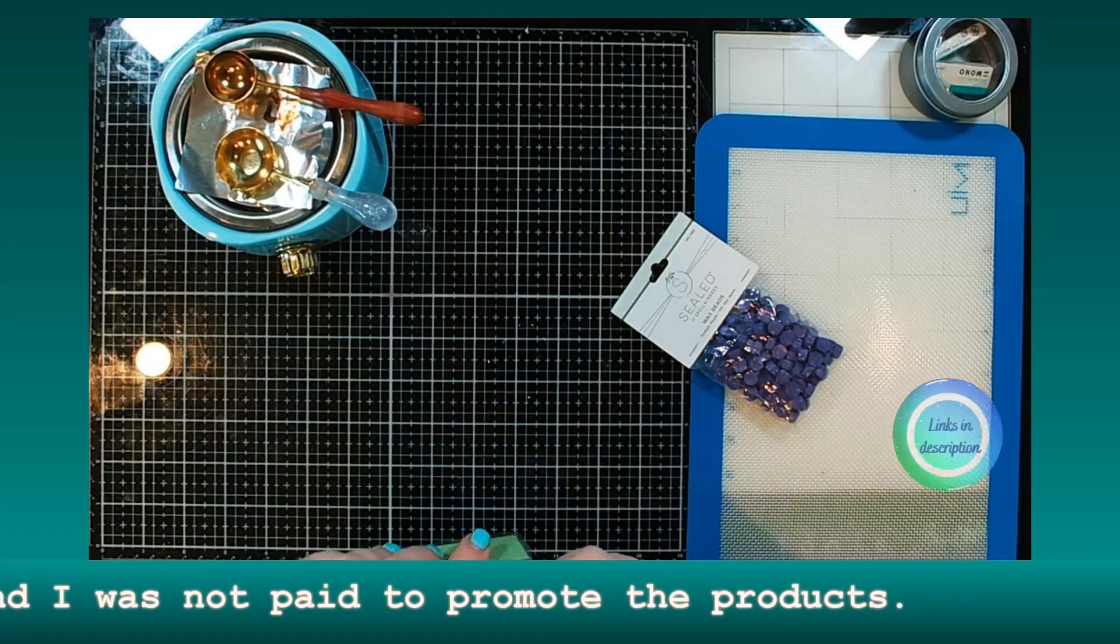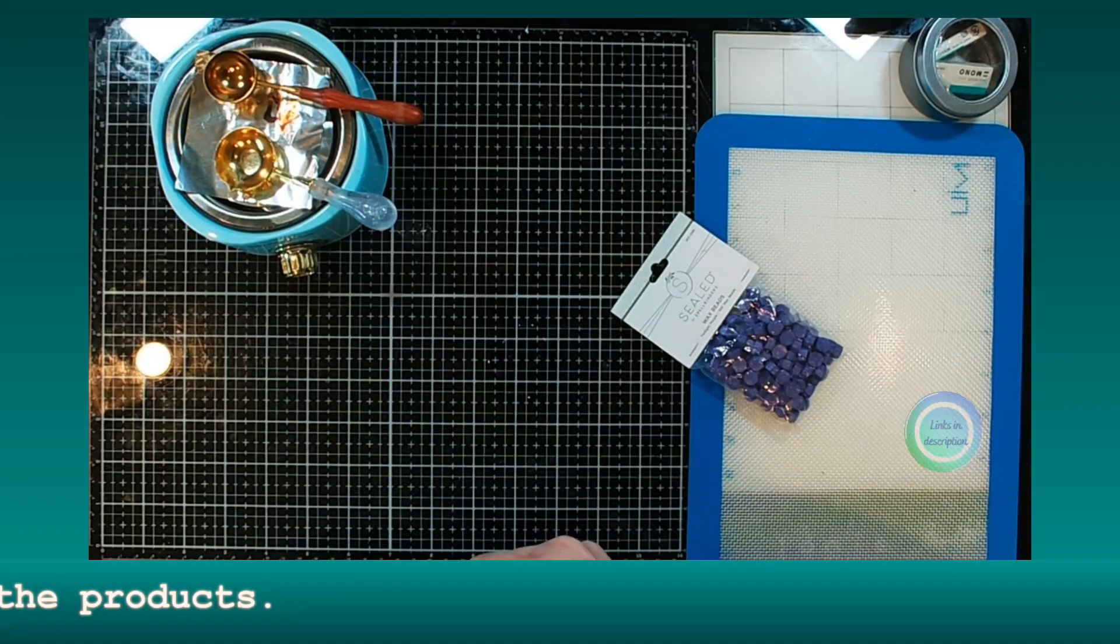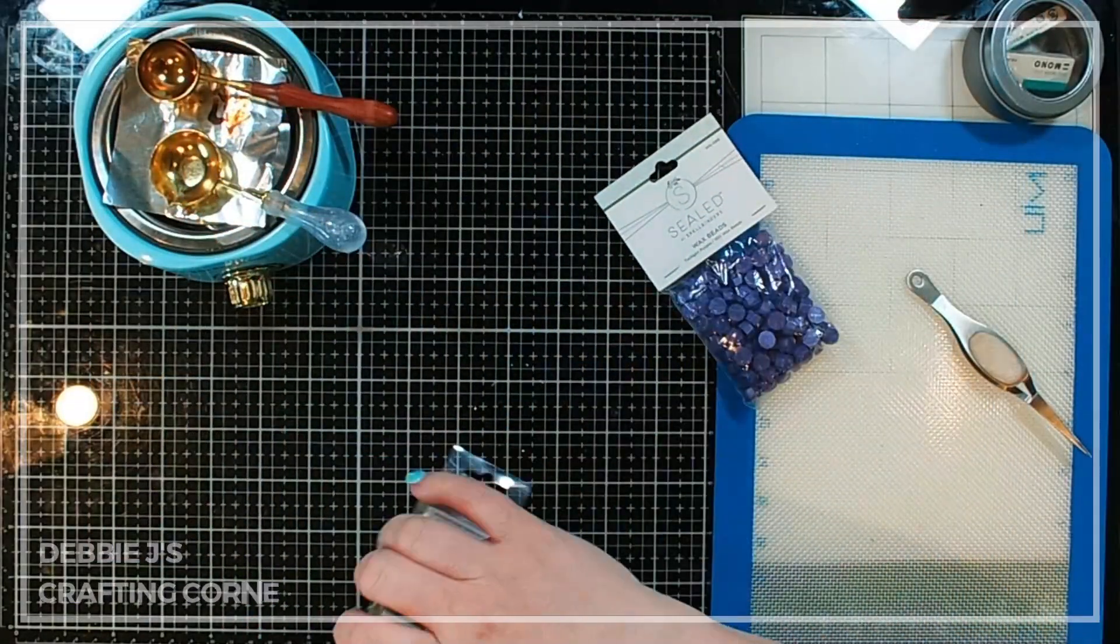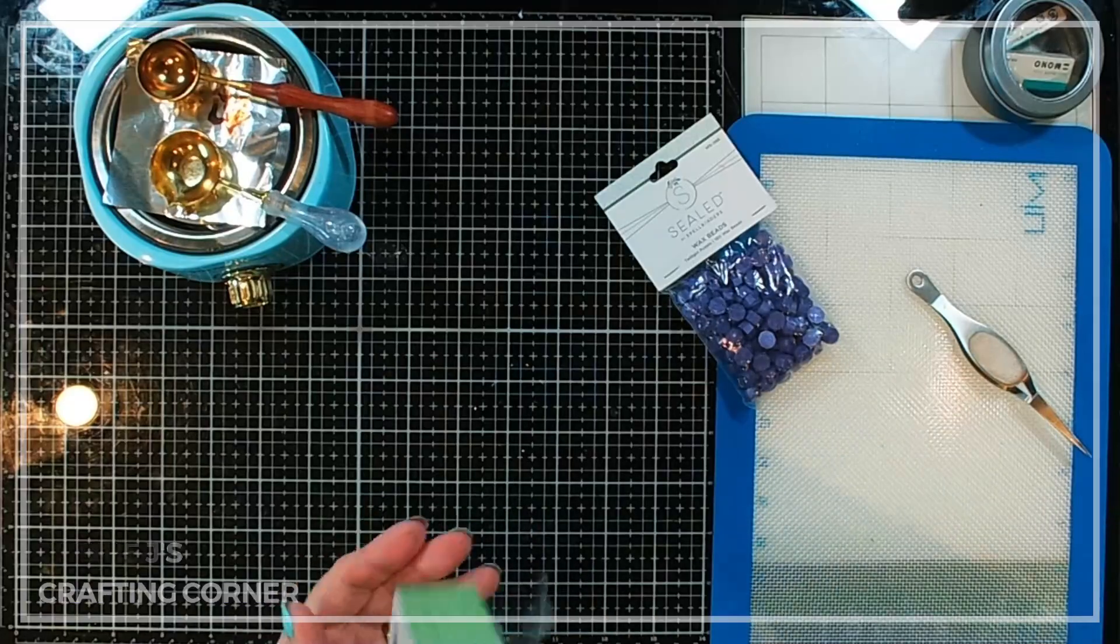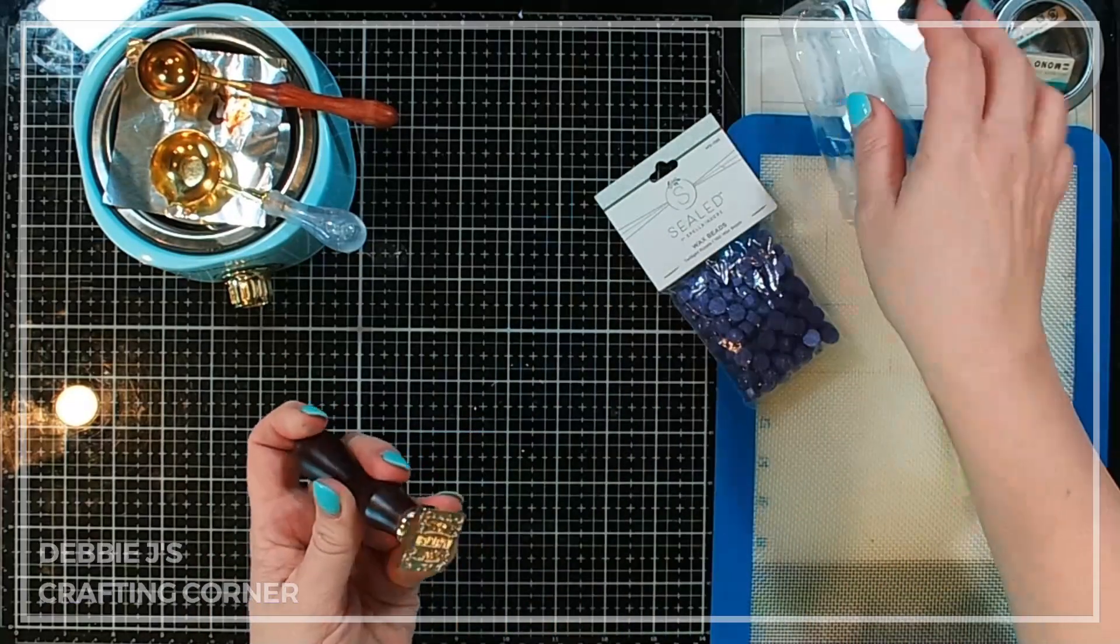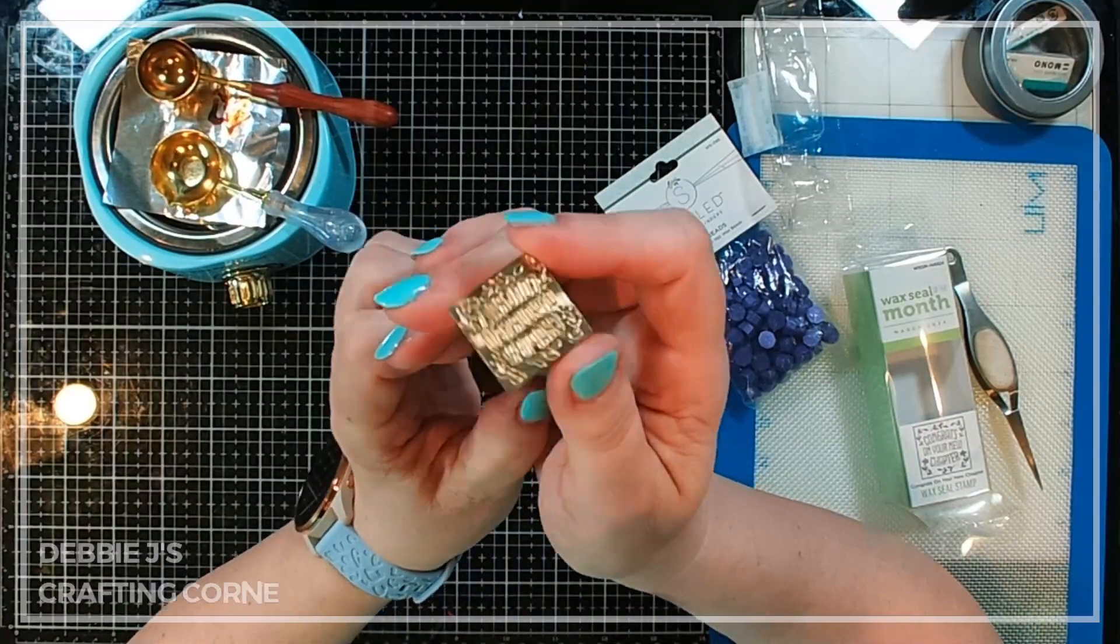I've also got some new wax beads. The ones I'm going to be using today are twilight purple and I think that color is just so pretty. So let's go ahead and take a look at the wax seal and then start heating up some of our beads. So there we go. Like I said it is a square. This one is going to be kind of fun.